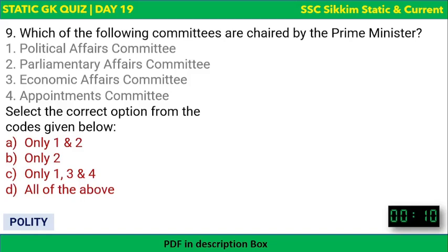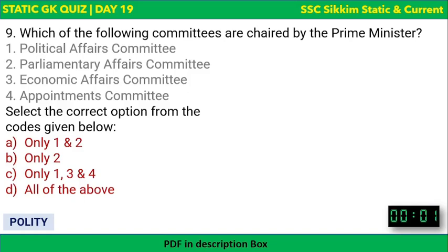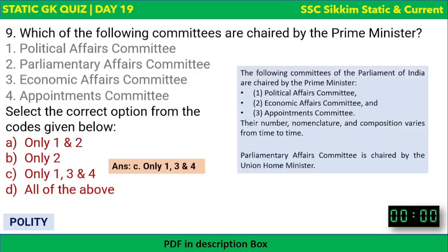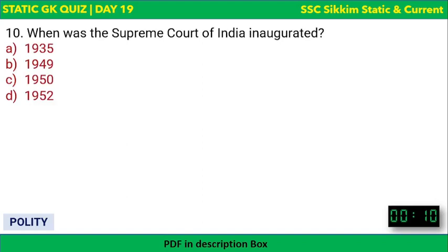Next question: Which of the following committees are chaired by the Prime Minister? The committees are: Political Affairs Committee, Parliamentary Affairs Committee, Economic Affairs Committee, and Appointments Committee. The correct answer is only 1, 3, and 4. The Parliamentary Affairs Committee is not chaired by the Prime Minister. The Prime Minister is the chairman of the Political Affairs Committee, Economic Affairs Committee, and Appointments Committee.